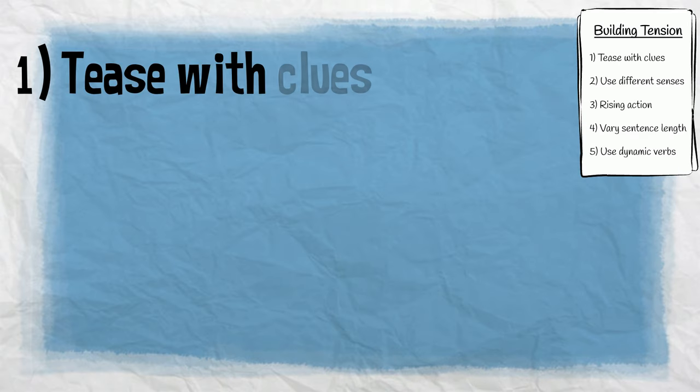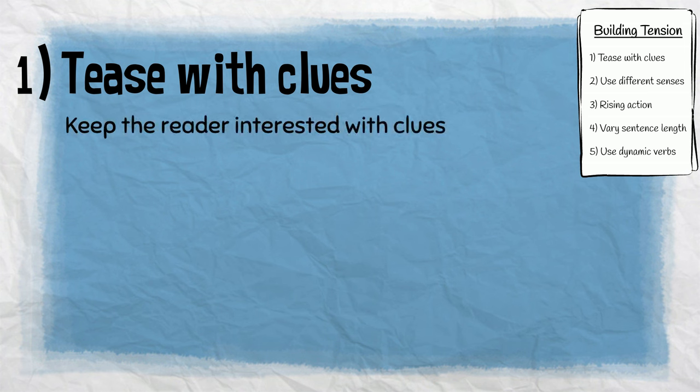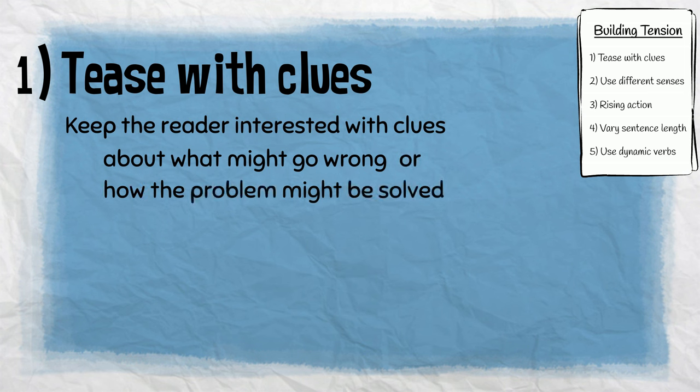Number one: tease with clues. We want to keep the reader interested with clues about what might go wrong or how the problem might be solved. Carefully dropping clues that a threat is close, or slowly revealing information about a threat, is a great way to build tension. But remember, we don't want to give everything away until right at the end.